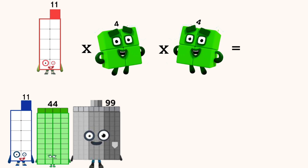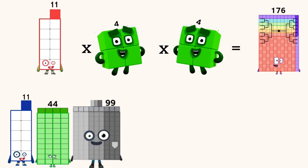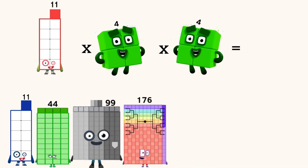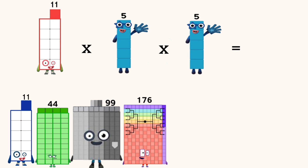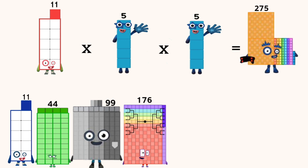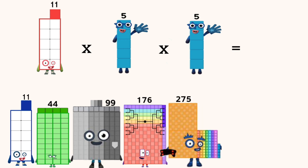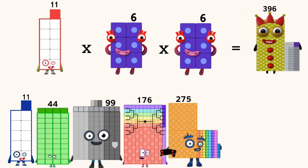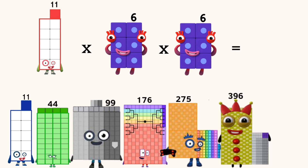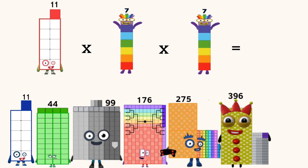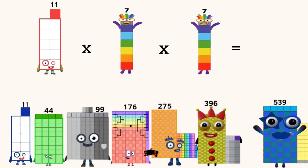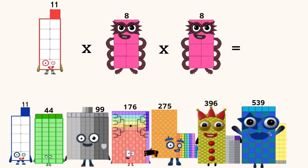Eleven times four times four equals one hundred seventy-six. Eleven times five times five equals two hundred seventy-five. Eleven times six times six equals three hundred ninety-six. Eleven times seven times seven equals five hundred thirty-nine.